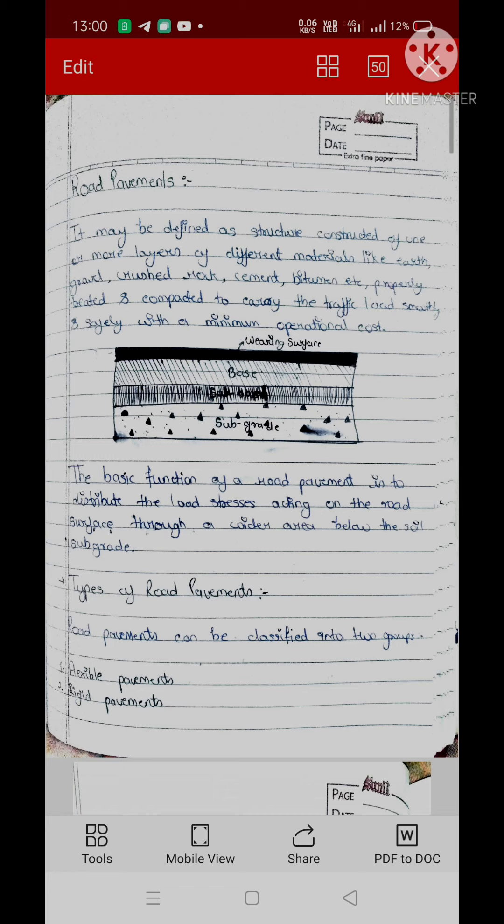In definition, it may be defined as a structure constructed of one or more layers of different materials like earth, gravel, crushed rock, cement, bitumen etc. It means that this structure is made by many layers. The number of layers is generally 4 or 5.